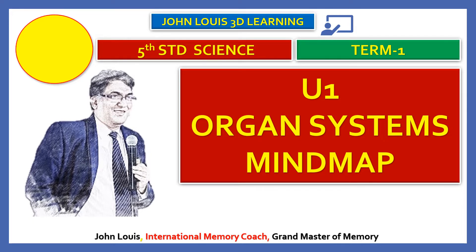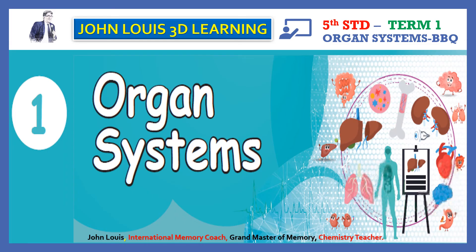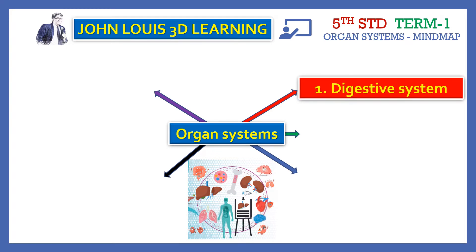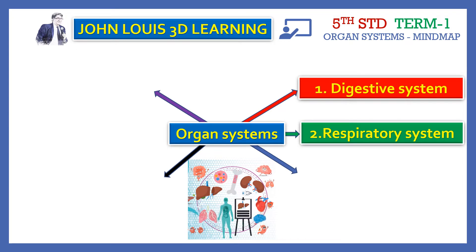In the Mind Map, we are going to learn the organ systems. We are going to learn 5 different systems. The first is the Digestive System. The second is the Respiratory System.